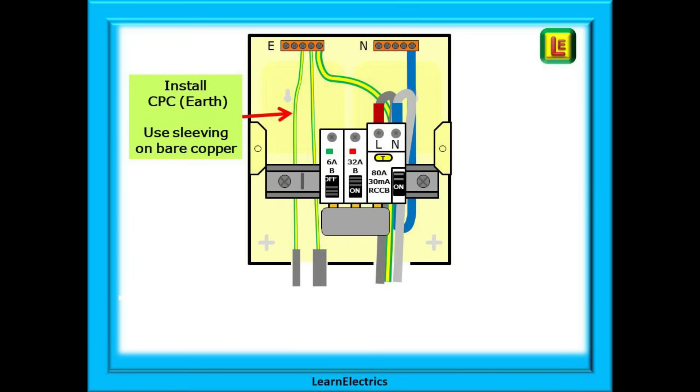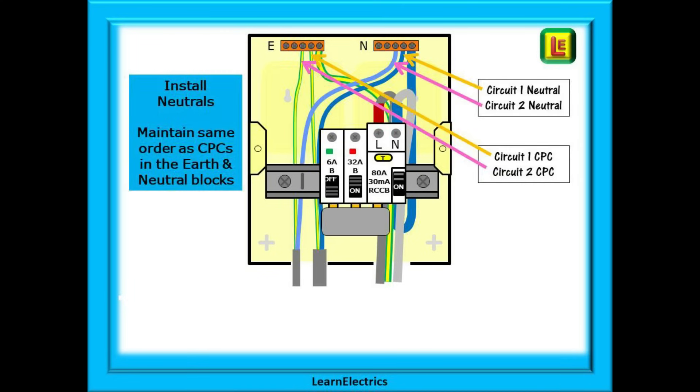We will assume the wiring to the lights and sockets will be in twin and earth cable. Now install the CPC or earth from each of the cables into the earth bar. And use sleeving on the bare copper CPC. Now install the neutrals into the neutral bar. Try to maintain an order in where you put the earths and the neutrals. On this drawing the 32 amp breaker is the second device from the right. Put the earth and neutral into the second hole from the right in each of the two bars. And the 6 amp breaker is the third device from the right. Use the third hole from the right for this device. This helps tremendously when testing the consumer unit or fault finding.